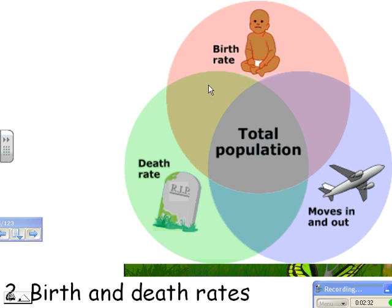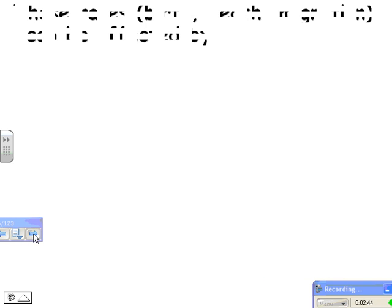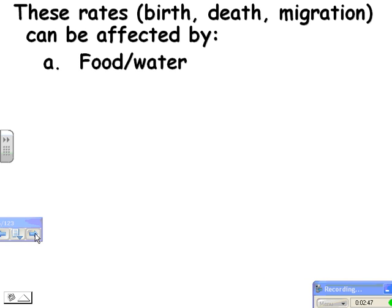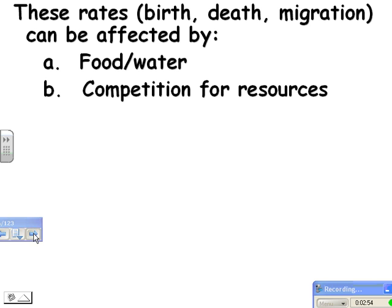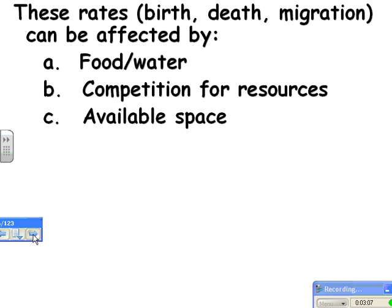The next thing is birth and death rates. If you have lots being born but lots dying, you'll keep a pretty stable population. But if a lot are being born and not too many are dying, the population will increase. Birth and death rates, as well as migration, can be affected by a number of things. Food and water: if you have plenty, you'll probably have more births, less death, and more immigration. If you have lots of competition for resources, organisms may leave or die, or fewer will be born because the mothers can't get enough food to carry offspring. You could also have a lack of space.